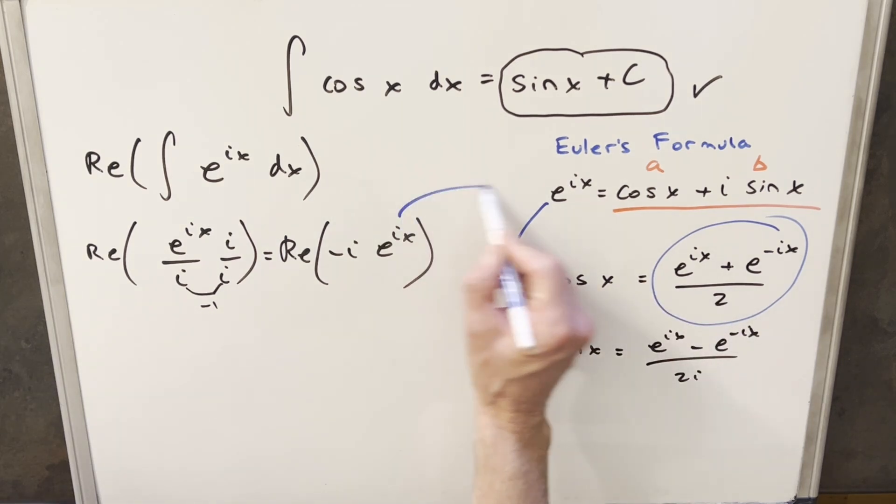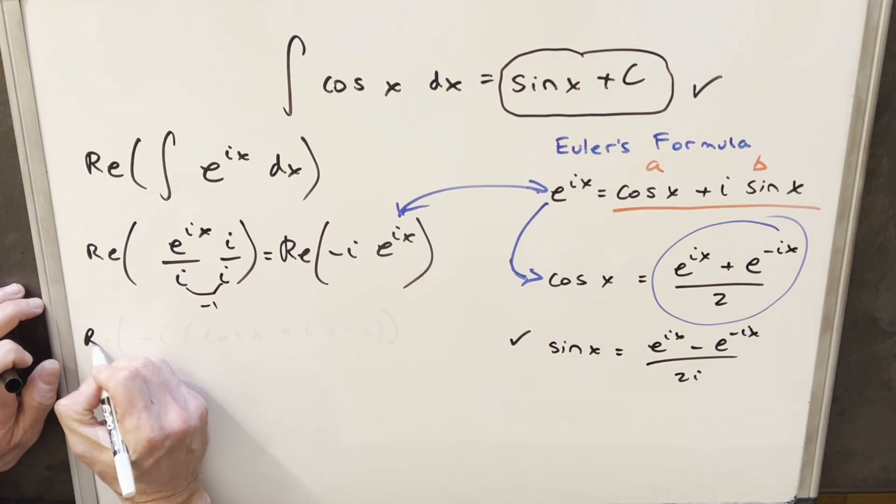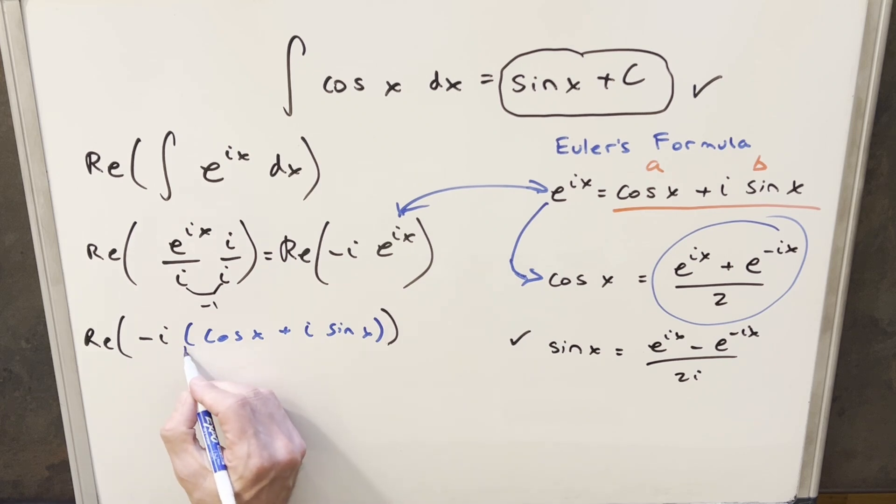So I can just plug Euler's formula in here and see what happens. And now that we have our Euler's formula in right here for e^(ix), all I need to do now really to finish it is just distribute in this minus i. So let's see what happens when I do that.